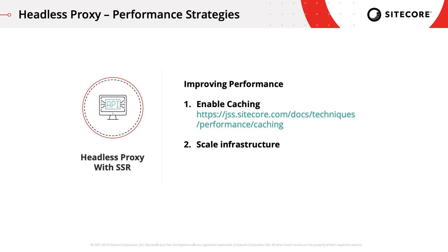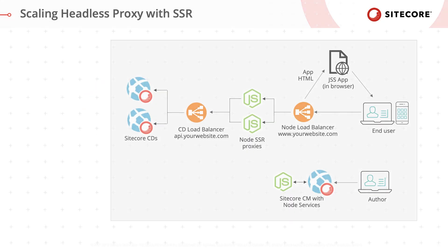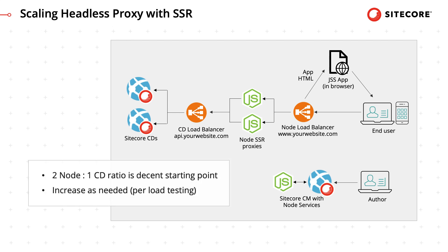Enabling caching is the easiest way to improve performance of your JSS apps. See the caching page in the JSS docs and video number 4 in this YouTube series for information on caching techniques in JSS. If output caching alone does not get you the necessary results, the next step is scaling the infrastructure. In headless proxy with server-side rendering, the Sitecore CDs and node servers can scale separately. Proper load testing is required to find the best ratio of CD to nodes for your specific code base, but two node servers for every CD is a reasonable starting point.